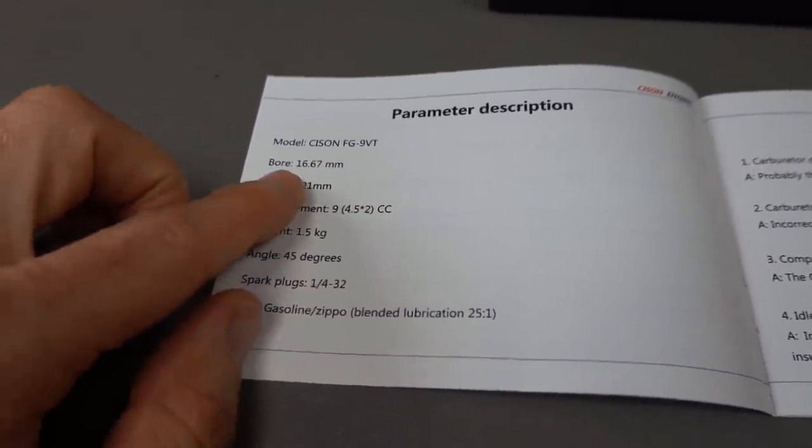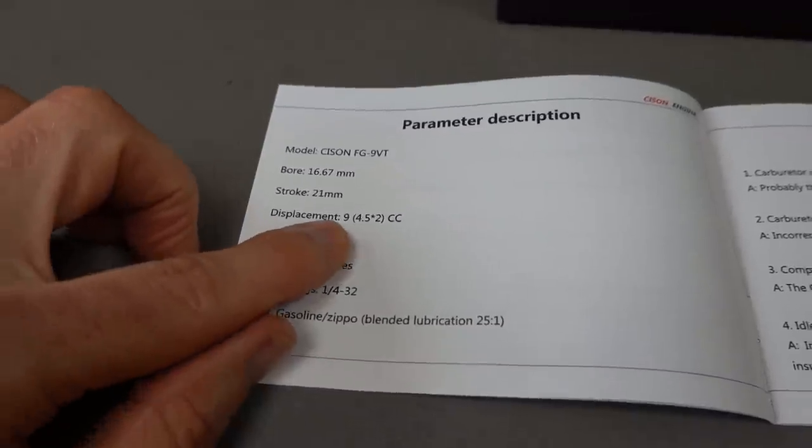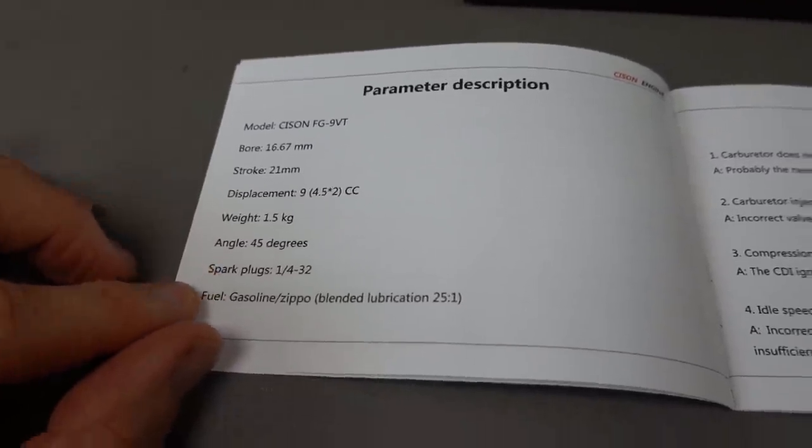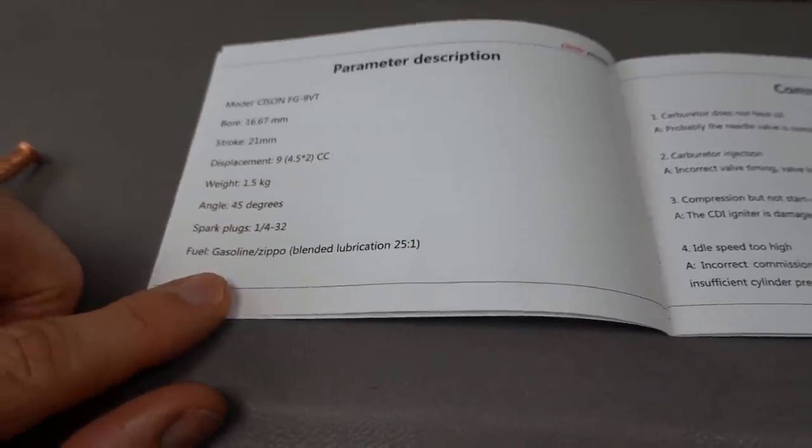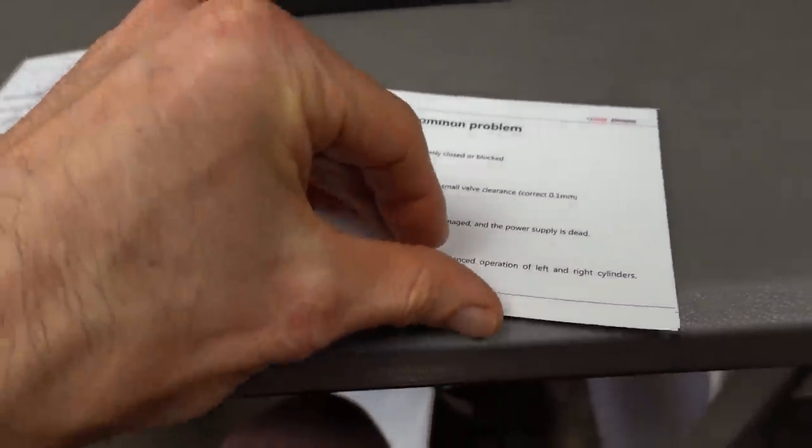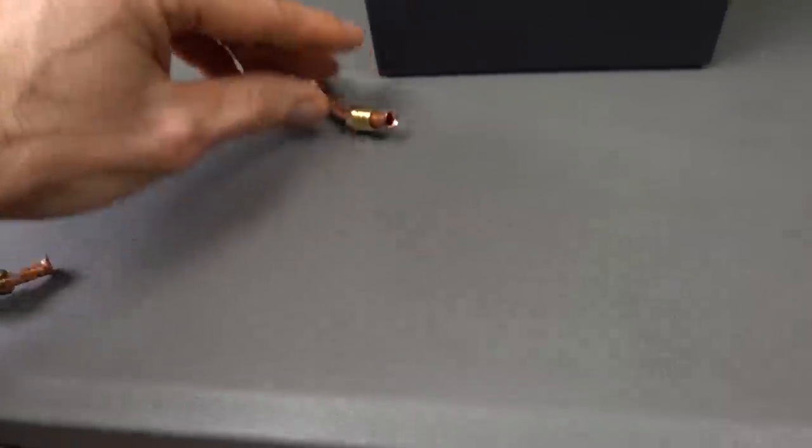But here we go, here's Syson FG9 VT: 16.67 millimeter bore, 21 millimeter stroke, 9cc displacement, 1.5 kilos, angle is 45 degrees, has spark plugs obviously, and it runs on gas or Zippo fuel with a blend of 25 to 1.